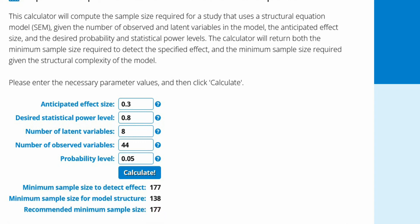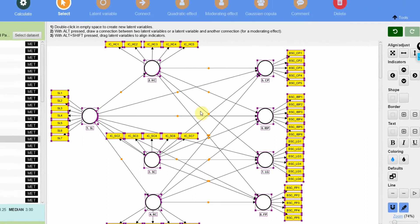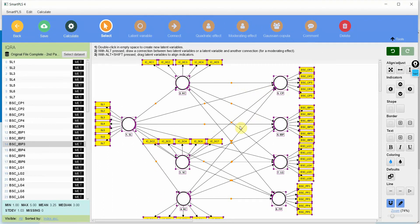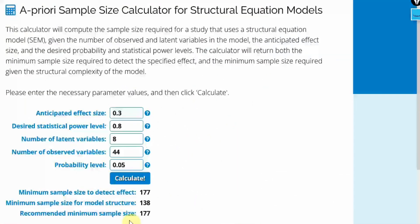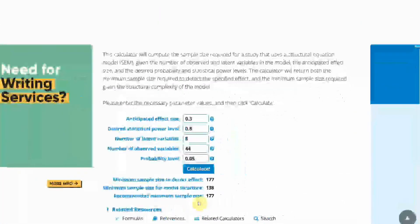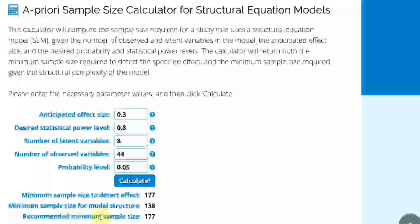Now with a model or such a model with so many latent variables and indicators, the minimum sample size that you require for your study is 177. So finally, you should get a sample size over 177 in order for you to detect an effect.